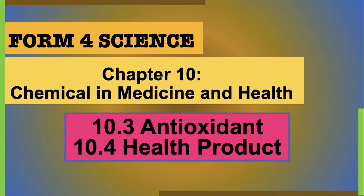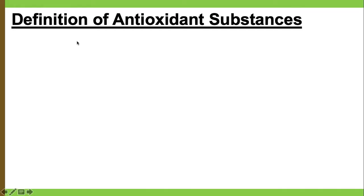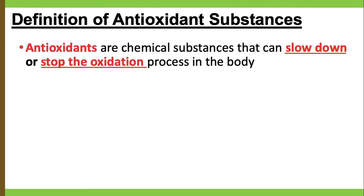Hello, students. We will continue our lesson with subtopic 10.3: Antioxidants, and subtopic 10.4: Health Products. What is the definition of antioxidants? We have learned about free radicals in the previous video. Free radicals are caused by the process of oxidation. Therefore, antioxidants are chemical substances which can slow down and stop the oxidation process in the body.